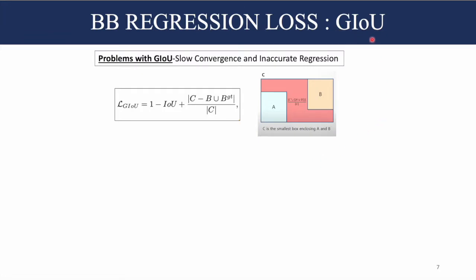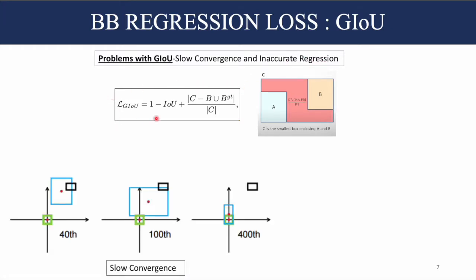GIOU also has its own problems: slow convergence and inaccurate regression. When there is no overlap, the only way GIOU loss can be minimized is by minimizing the penalty area, and the way the predicted bounding box achieves this is by increasing its own size. This reduces the penalty area but leads to slow and indirect convergence.